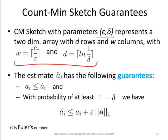And then we have the following probabilistic guarantees. The first one, well, it's not a probabilistic guarantee. It's simply a hard guarantee saying that the estimate is always larger or equal than the true value. And now comes the probabilistic guarantee for the overestimation. It says that with probability of at least 1 minus delta, we have or we can bound the overestimation by this part here, which is the true value plus the overestimation epsilon times the norm of the vector a, which contains all the true values of our occurrences for the values ai. Here E is Euler's number.